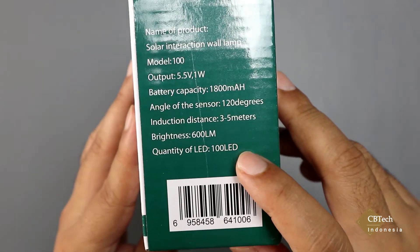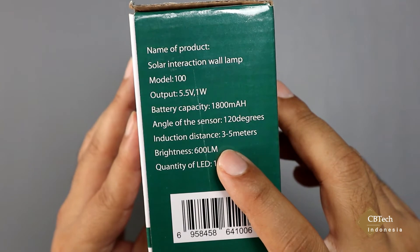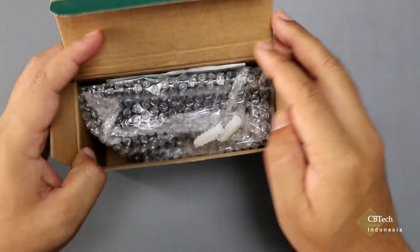Nah tertulis di sini ada sebanyak 100 lampu LED-nya, 600 lumens. Jadi mungkin cukup terang. Nah baik kita akan buka untuk melihat kelengkapan apa saja yang kita dapatkan dalam paket penjualannya ini.